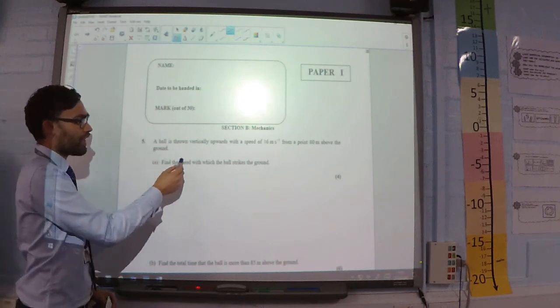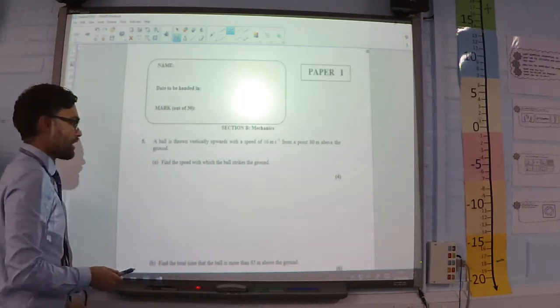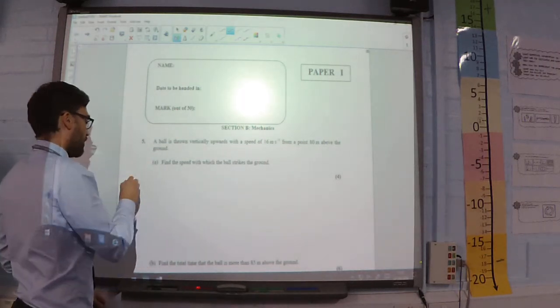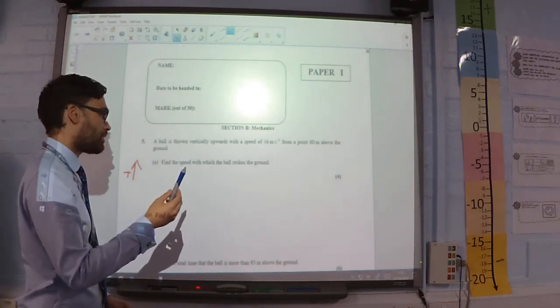The ball is thrown vertically upwards with a speed of 16 meters per second from 0.80 meters above the ground. Find the speed with which the ball strikes the ground. So, I'm going to have up as my positive direction because I'm starting by throwing upwards.